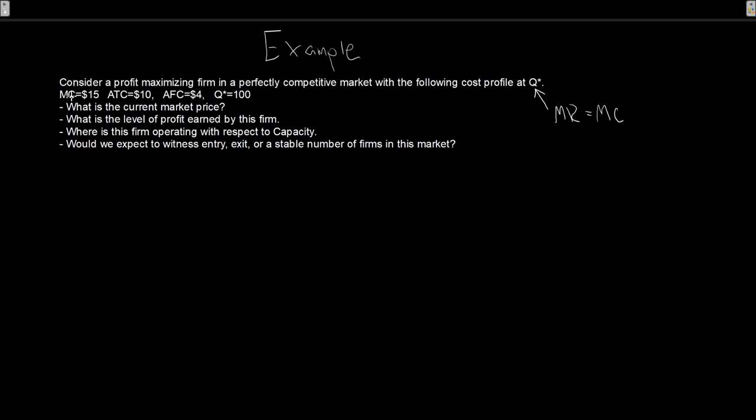Q star is the point where our marginal revenue equals our marginal cost. We have the following cost profile. We have a marginal cost of 15, average total cost of 10, average fixed cost of 4, and our current Q star, our profit maximizing level of output is 100. First question, what is the current market price?